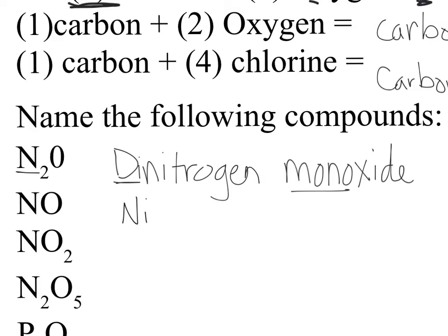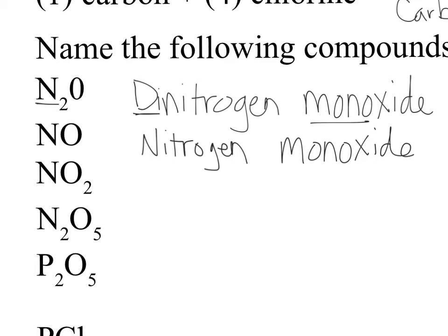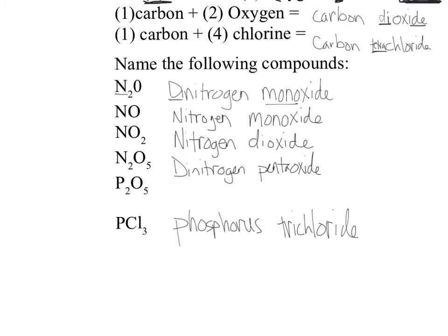You always need a prefix on the second element even if it's one. So NO₂ is nitrogen dioxide — one nitrogen, no prefix; two oxygen, so dioxide. N₂O₅ is dinitrogen pentoxide — di for two nitrogen, penta for five oxygen. P₂O₅ would be diphosphorus pentoxide. And one phosphorus with three chlorine: just phosphorus, and then trichloride — phosphorus trichloride.